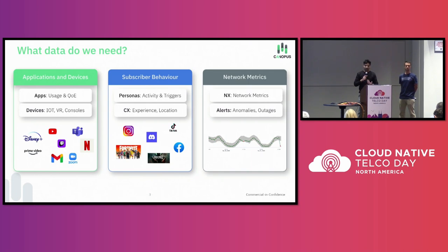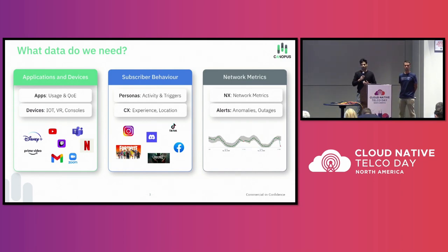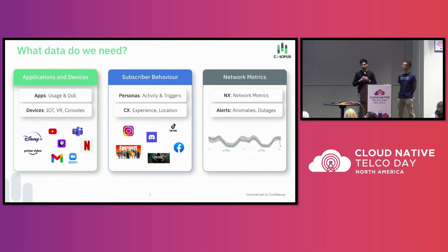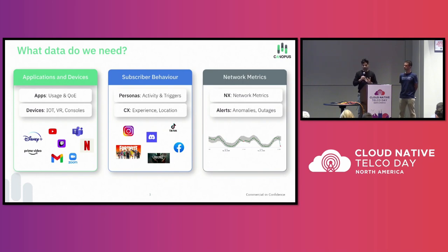A fixed-line operator needs to know what devices are in homes, whether IoT devices are behaving properly, exhibiting anomalous behavior, or launching an attack — whether gamers are playing on consoles, have VR headsets, or are on PCs. It also means building subscriber behavior personas to work with ad tech combined with real-time activity. When someone is at the airport looking for a hotel website, that's the right time to send an SMS selling a roaming plan. All this — applications, devices, subscriber behavior, and network metrics — needs to be collected at terabit scale in real time, which is incredibly hard.